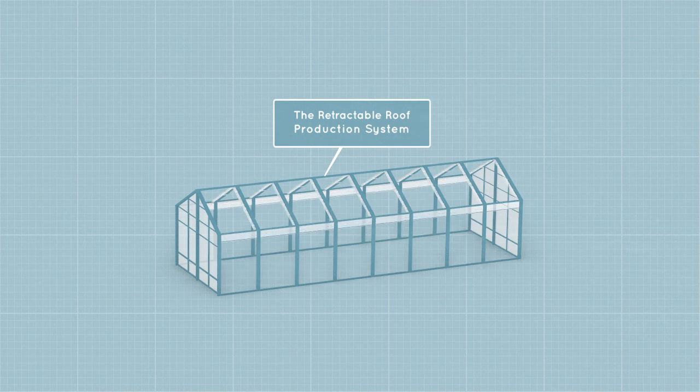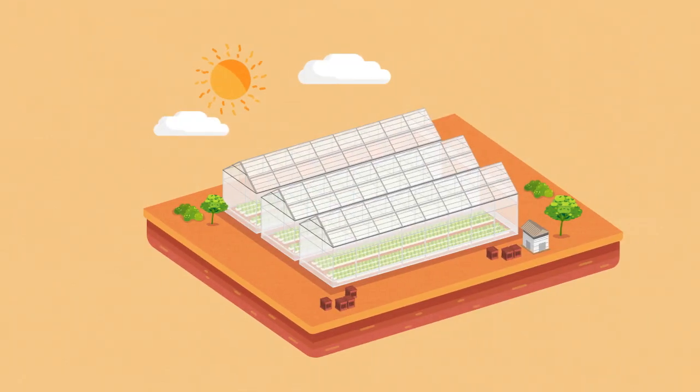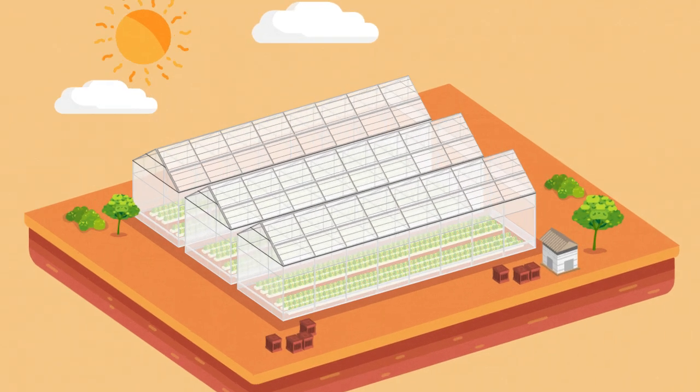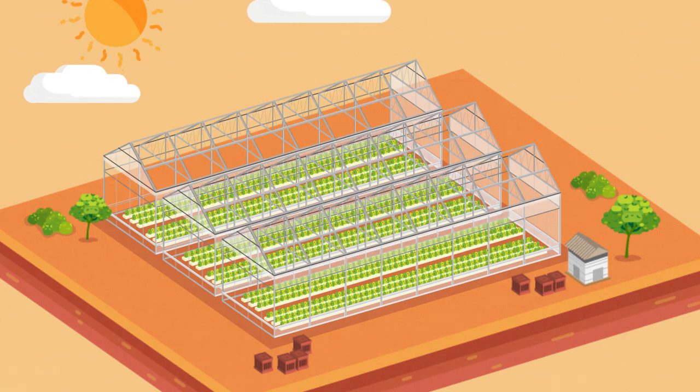Introducing the retractable roof production system which creates a more consistent growing environment for farmers in warm and hot climates. When the weather is ideal, the roof will automatically retract allowing the natural outdoors to come inside.